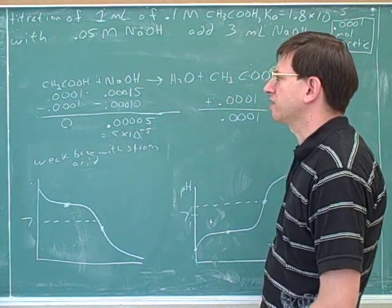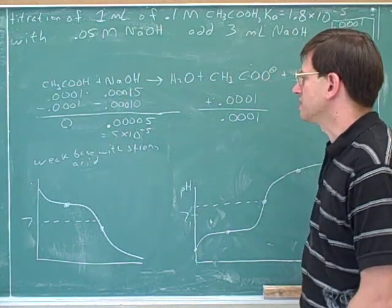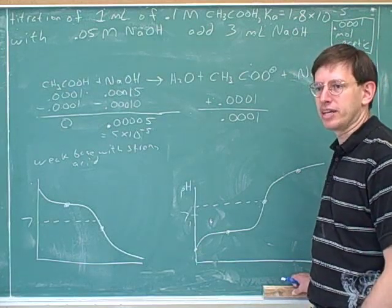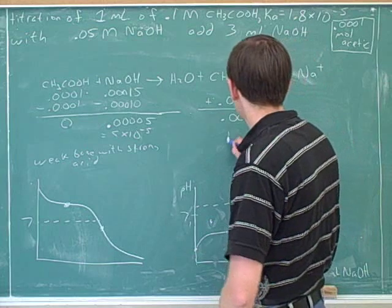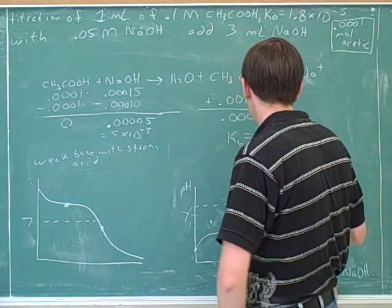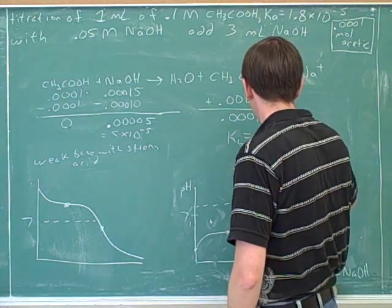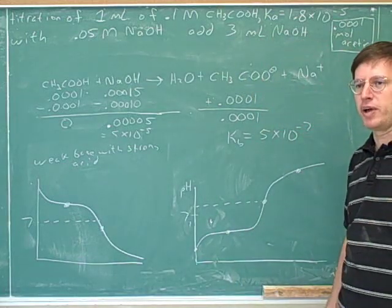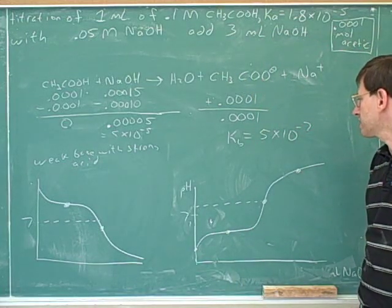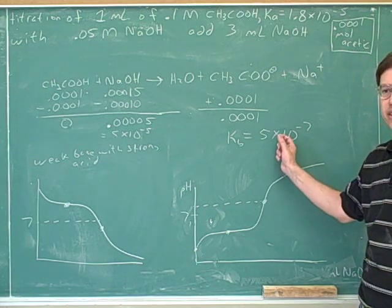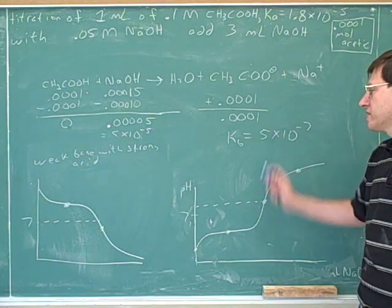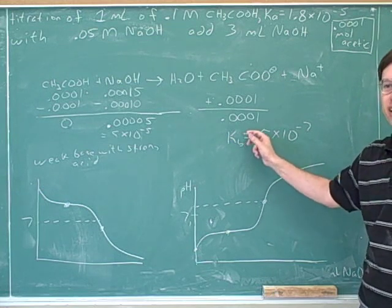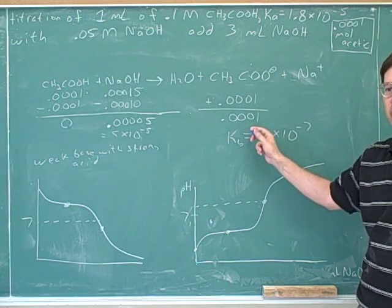One other mistake that might have come up there that I wanted to point out was when we were trying to find the pOH. We had something like Kb is something like 5 times 10 to the negative 7, and we tried to find the pOH. I think our first instinct was to take the negative log of this. But remember, the pOH is not the negative log of the Kb. It's the negative log of the hydroxide concentration. So that's a common mistake that people make.